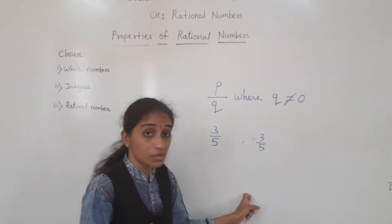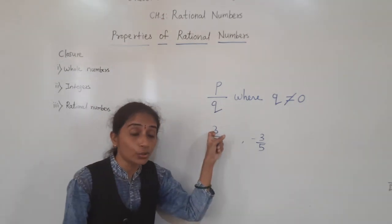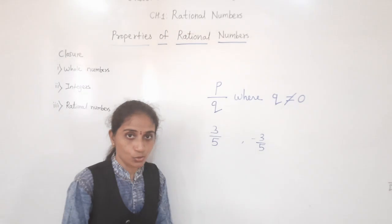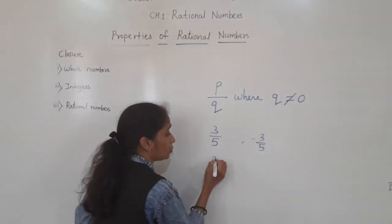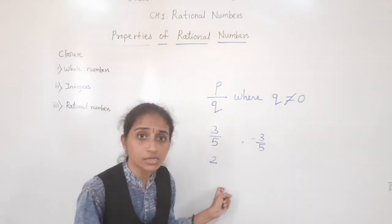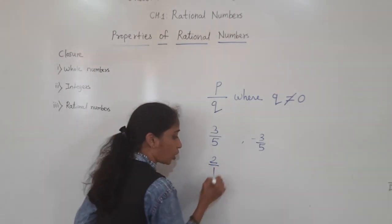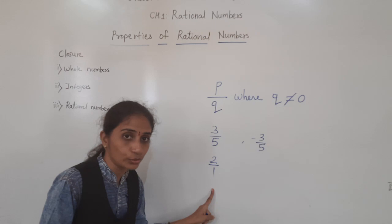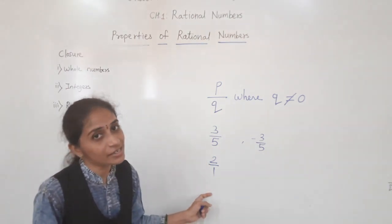So, understood what is meant by rational number? The number which we write in the form of P upon Q, where Q is not equal to 0. Now, you may ask: is 2 a rational number? Yes, 2 is a rational number, because the denominator for 2 is 1 — there is no explicit denominator, it means 1. So this is called a rational number.